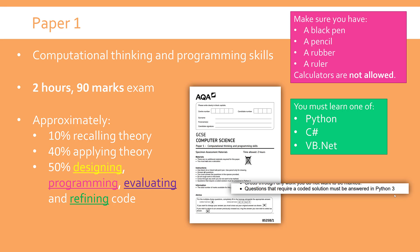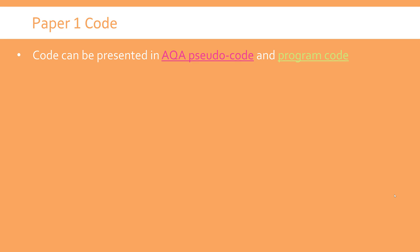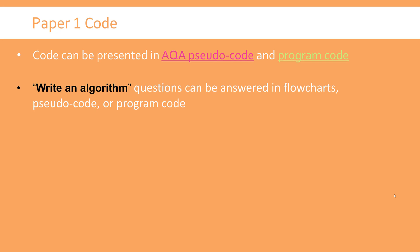Code will be presented as examples in either AQA pseudocode or program code, so you might see one or the other dotted about the paper. I've got a separate video on AQA pseudocode — you don't need to learn it in detail but you must be able to interpret it, and occasionally apply it as well. Program code is something you've got to learn, and it'll be Python, C# or Visual Basic. If a question says 'write an algorithm', you can answer in flowcharts, pseudocode, or program code — almost any formal representation, but not written English.